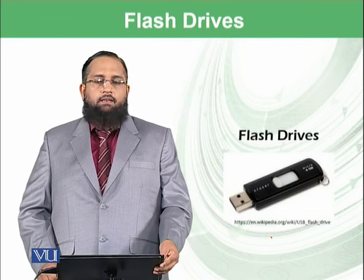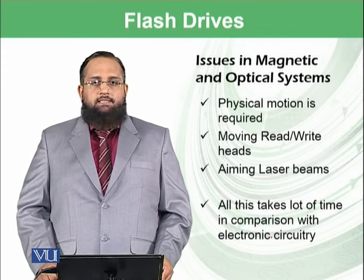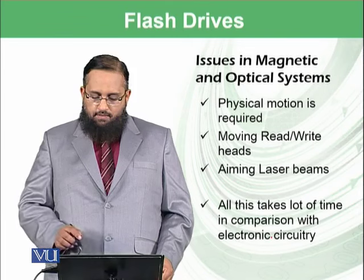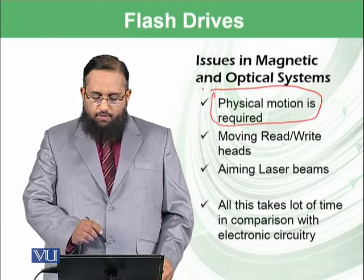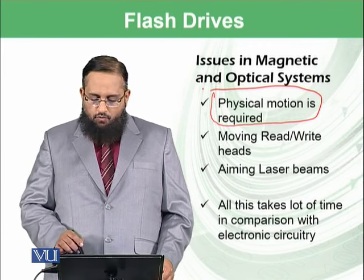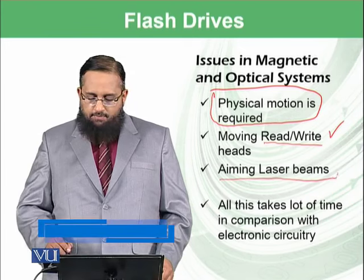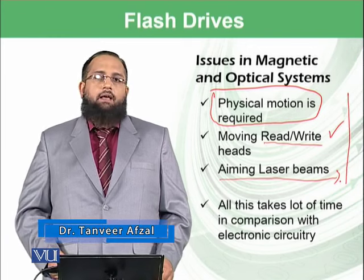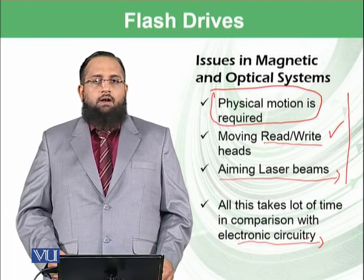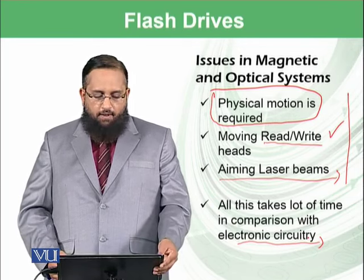Mass storage means we want to store data for a long period of time, and that should be non-volatile. The issues in magnetic systems — whether optical system or hard drive magnetic system — were the physical motion. You need to rotate the disk and move the read-write heads in magnetic systems, and also aim the laser beams in optical systems. All of these operations are not compliant with the electronic circuitry in our computer, so we want something in which we could store data electronically. This need was addressed by flash drives.